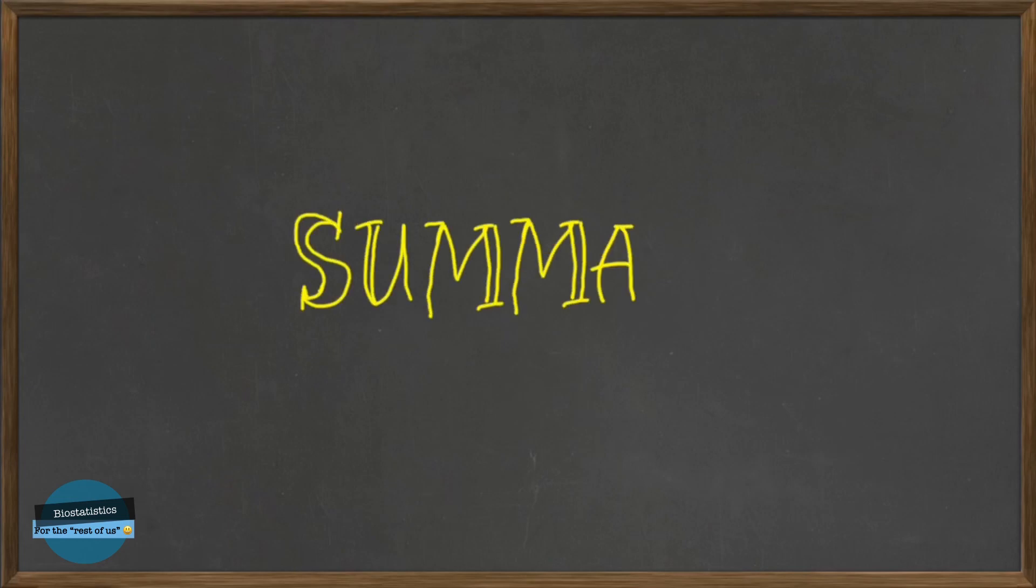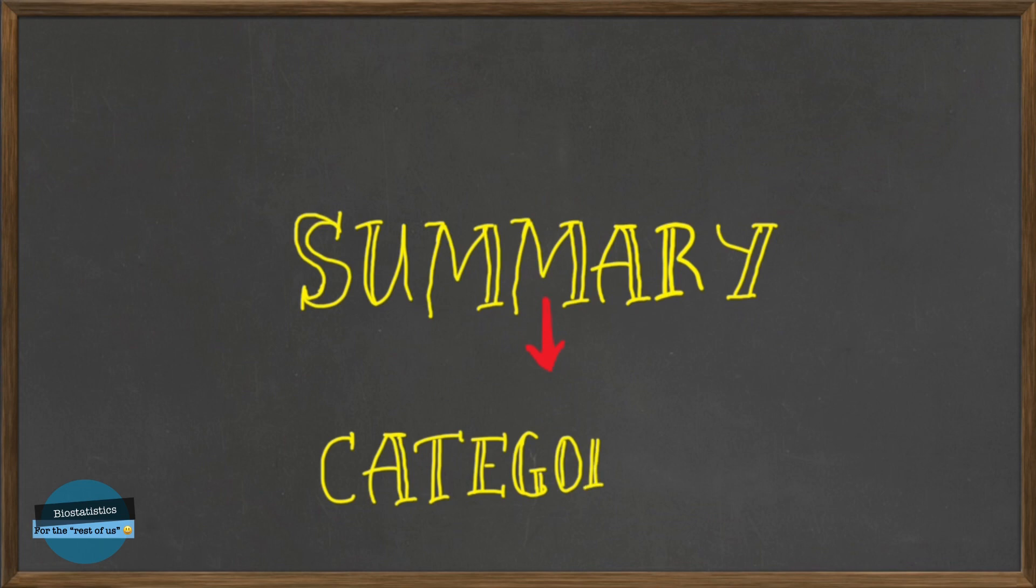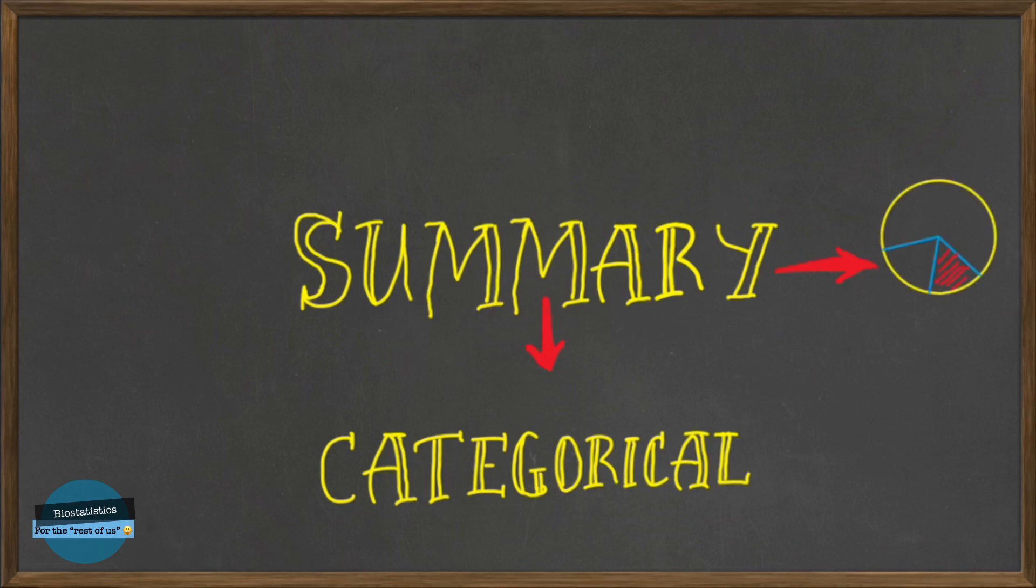In summary, we said a pie chart is essentially a circle divided into sectors. And it is used mainly to graphically represent data from categorical variables. Each sector represents a category in the variable. And the area of each sector is proportional to its frequency.